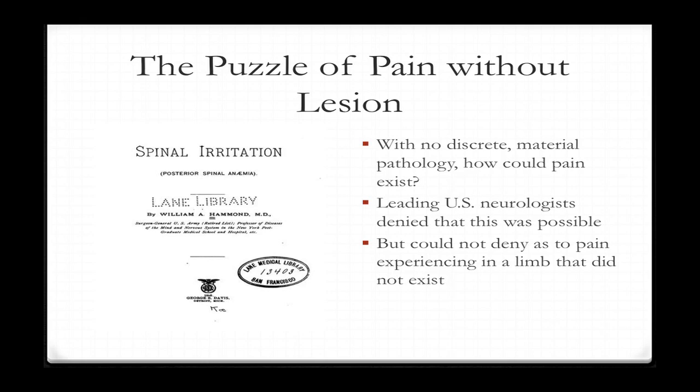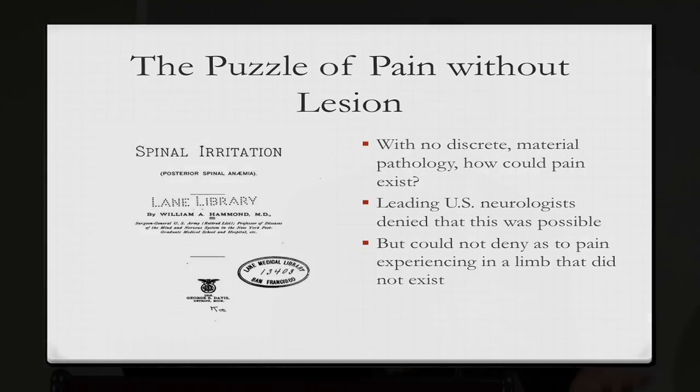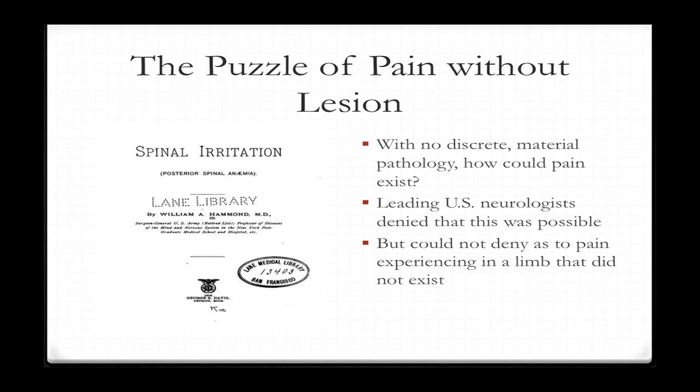Pain without lesion is a problem because there's no lesion. With no discrete material pathology, how could pain even exist? Leading American neurologists actually denied that this was possible. This leads to what I call somaticism — the idea that whatever illness complaint the patient experiences has to be explained in terms of lesions in the body. Soma comes from the Greek word for body.